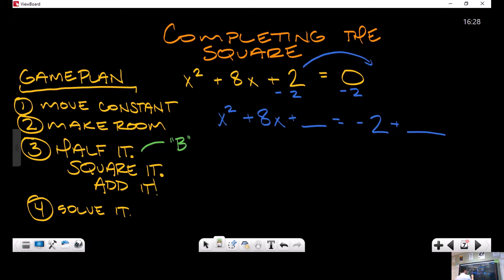First up, I've got to identify b. B is 8, so that means I am going to half it: b divided by 2 equals 8 over 2, which is 4. Now I'm going to square it: 4² equals 16. Now I add it - I'm going to put it over here, add it on one side, using that space we just created, and add it on the other side.